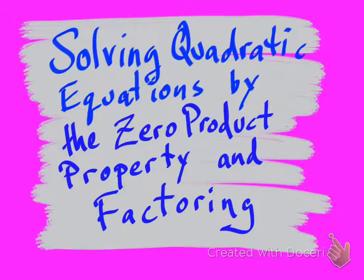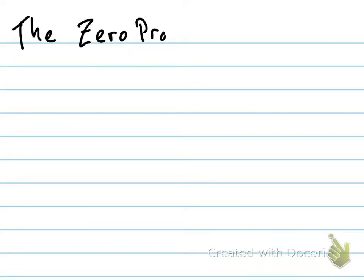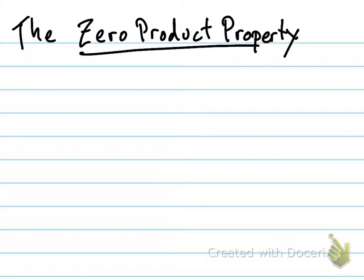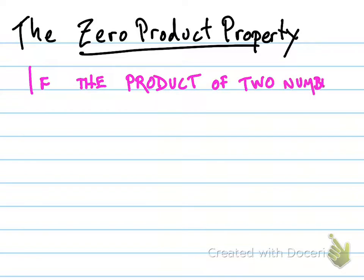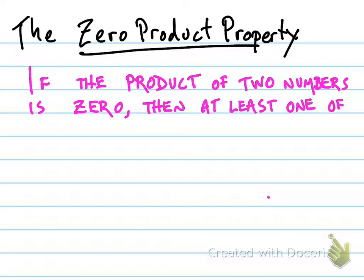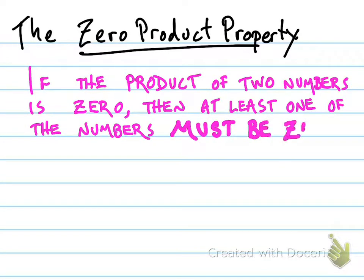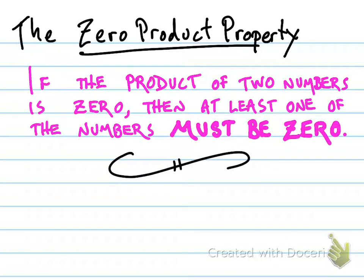Let's talk first about the zero product property. It's a mathematical property that says something that should seem fairly obvious. It says that if the product of two numbers is zero, then at least one of those two numbers must also be zero. In other words, if you take two numbers, multiply them together, and the product is zero, then at least one of those numbers must be zero.